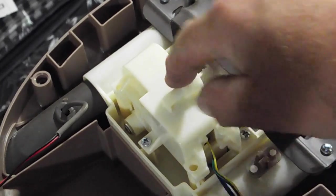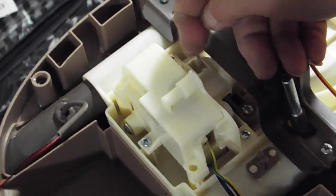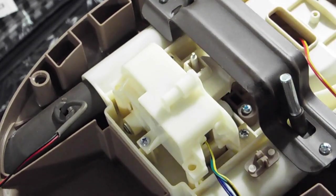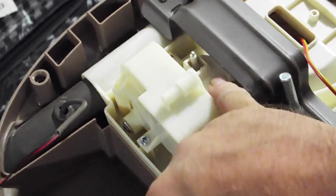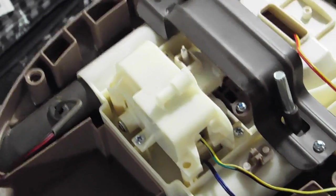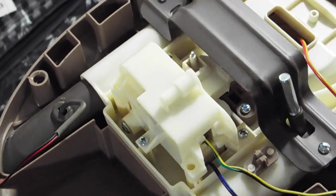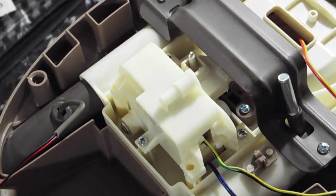All right, so this is the motor assembly here. And it's got this spring-loaded arm here that goes through this plastic arm right here that moves with the swing. And that's how the motor rocks the swing back and forth from that spring-loaded arm.